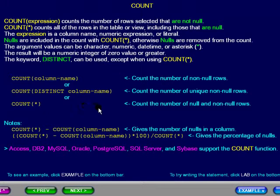Then we show you two examples. The first gives the number of nulls in a column, and the second gives the percentage of nulls.